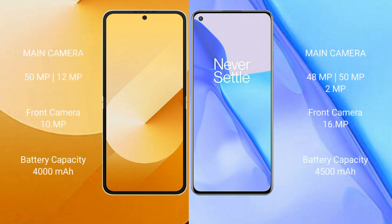Samsung Galaxy Z Flip 6 features a dual camera setup: 50MP plus 12MP rear cameras and a 10MP front camera. OnePlus 9 comes with a triple rear camera setup: 48MP plus 50MP plus 2MP, and a 16MP front camera.